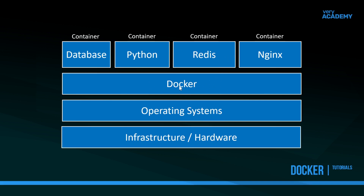These individual containers are isolated from the operating system, which means they are scalable — we can move them around and give them to other developers. They are isolated, but they can talk to other containers, which is useful when utilizing a database and Python or Redis, because we want those containers to communicate with each other. Docker provides the tools to help manage these containers and provide communication between them.